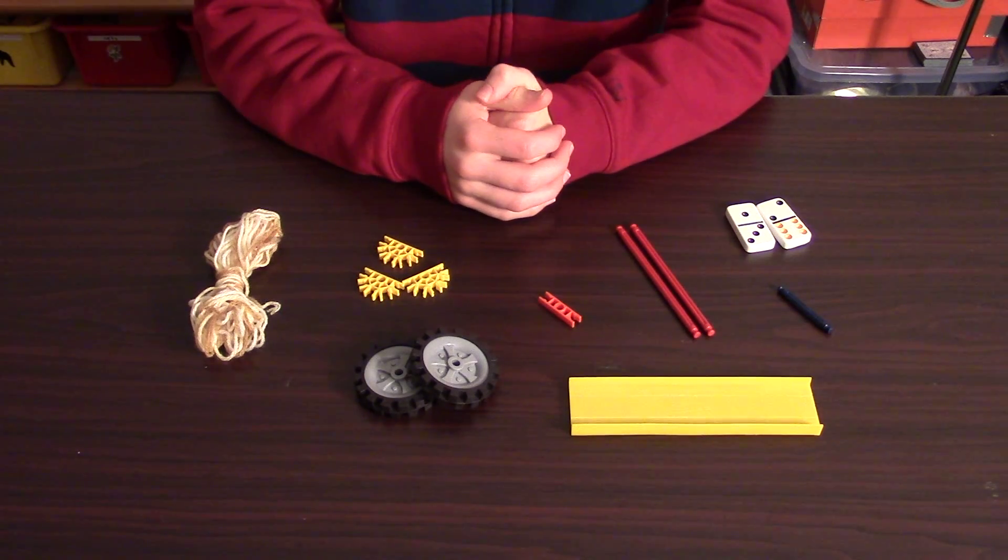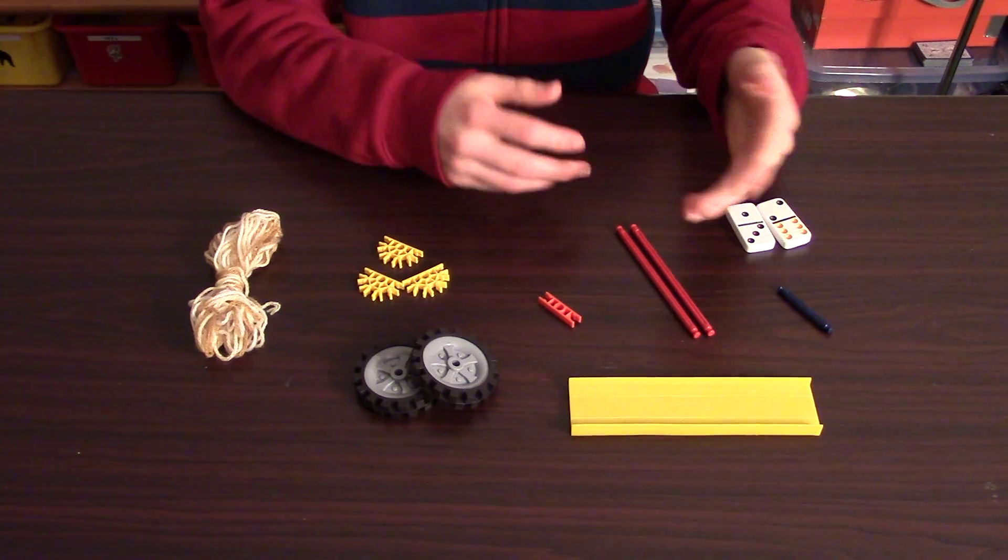If you make Rube Goldberg machines, you should have the rest of these materials: dominoes, track, and string.